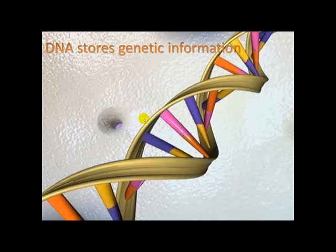Remember that DNA is the macromolecule that stores genetic information. Here we see four different colors — orange, pink, purple, and yellow — representing the four different types of nucleotides: adenine, guanine, cytosine, and thymine.